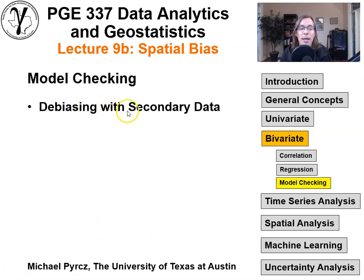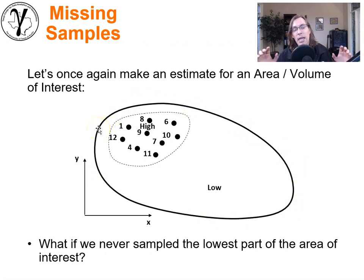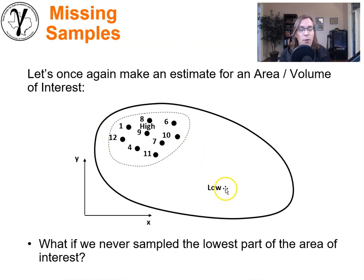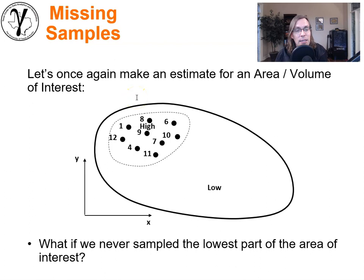Now we get into the idea of debiasing with secondary information. Let's introduce this idea by showing a very simple example. In a plan view of an area of interest, this dark outline represents a volume over which we're trying to make an estimate — say average porosity. We have a location where we expect higher quality values, and those are all the samples we have. Everything else will be lower values, yet we have no samples available from that region. How can we make an estimate of the average porosity when we have no samples from the low part of the distribution?